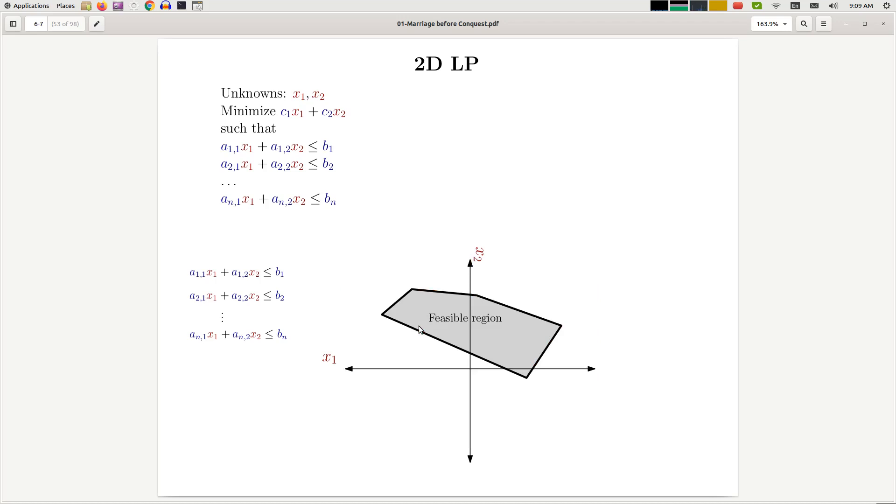Again, similar to the one-dimensional case, the feasible region is the region of all possible values for x1 and x2 that satisfy all of these constraints. But that's not what we want to solve. We want to pick one particular point in this feasible region that minimizes this function. How do we do that? To do that, first we need to understand what this means—what it means to minimize this linear function. We're going to look at that in the next video.